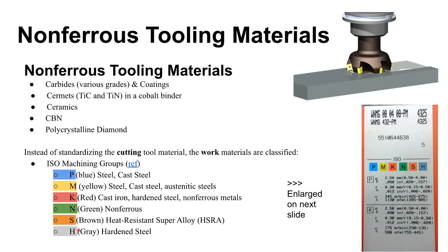It's good to memorize the ISO machining groups. P is the steel group, M is the stainless steel group, K is for cast iron, N for non-ferrous metals, S for super alloys, and H for hardened steel. Here's an example of a cutting tool insert package — you can see it's rated for the P and K groups, and it gives you specific numbers.